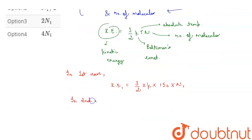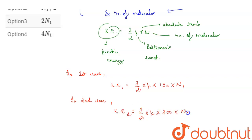In the second case, kinetic energy 2 equals (3/2) × k × 300 × N2, where N2 is the number of molecules of gas sample 2 and 300 K is the temperature of gas sample 2.